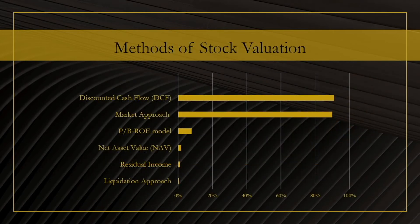Before looking at the formula, I just wanted to relate the model to other stock valuation models. The diagram here shows the most frequently used models, according to a survey conducted in 2019, and we can see that the price-to-book value return on equity model is the third most frequently used after the discounted cash flow model and the market approach.